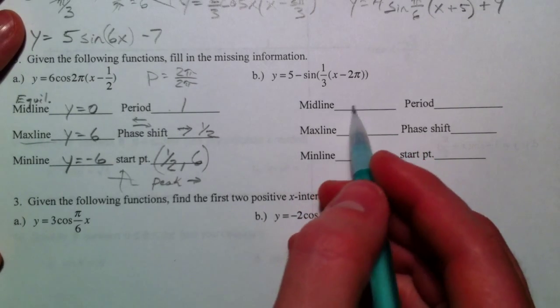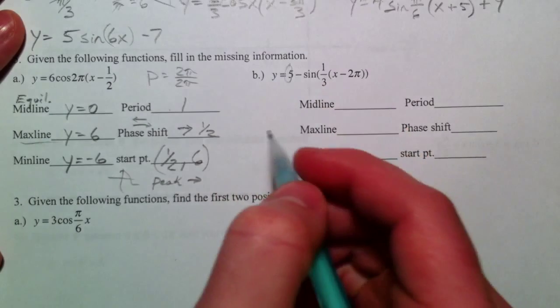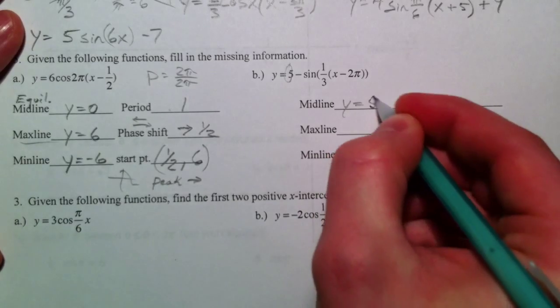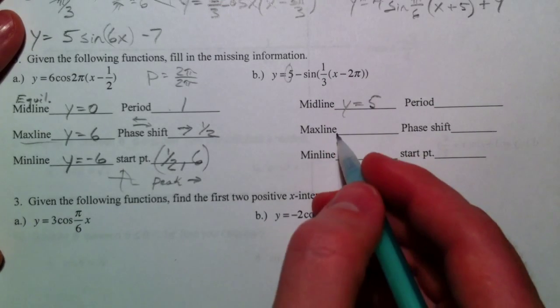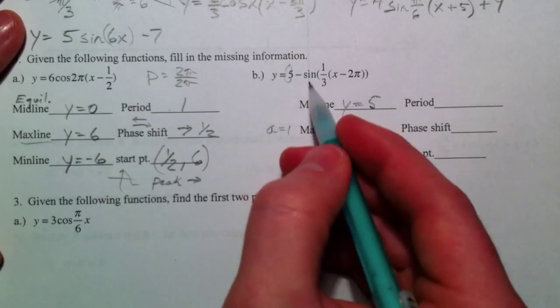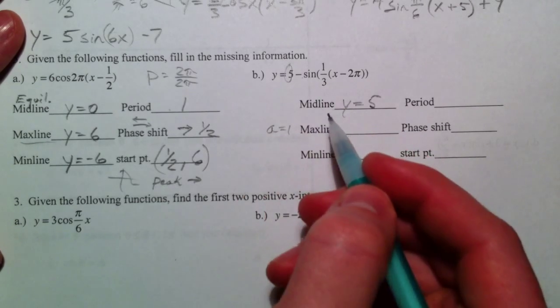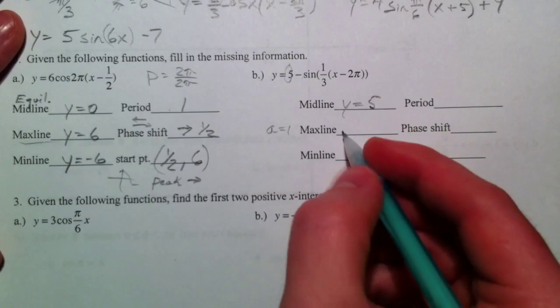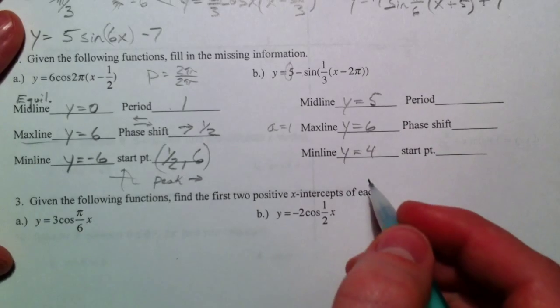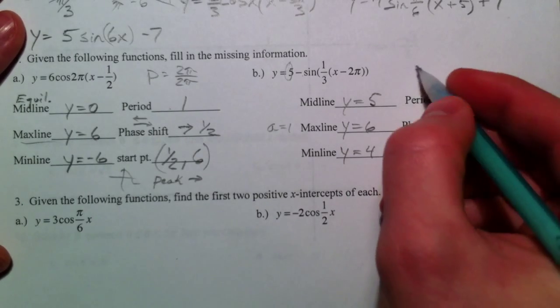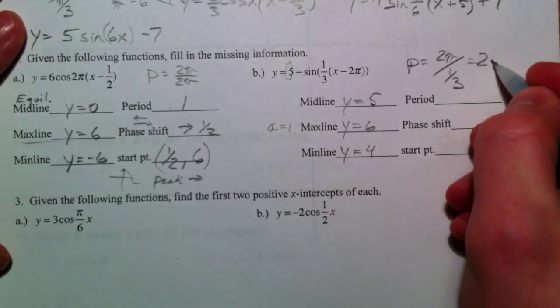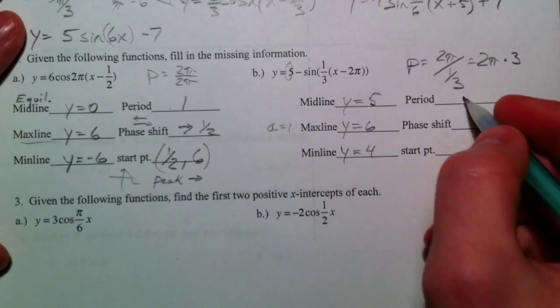Midline. Well, midline is the up and down motion. And so this 5 is our midline. Max line. Well, the max, the amplitude, is 1. There's a negative in front of the sign, so it's going to be flipped going down first. But the amplitude is 1. So it goes up to 6. And it goes down to 4 from 5. The period is usually 2 pi. 2 pi divided by 1 third is 2 pi times 3. And so the period is 6 pi.